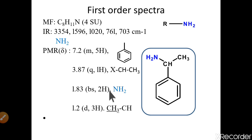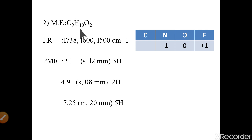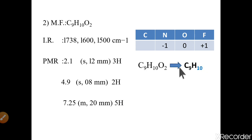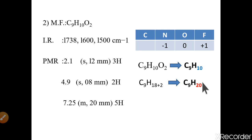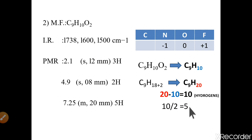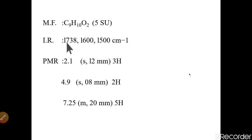Let's go to the next problem. The molecular formula is C9H10O2. To calculate the degrees of unsaturation, oxygen is ignored, so we work with C9H10. The saturated hydrocarbon formula for 9 carbons is C9H20. So 20 minus 10 equals 10 hydrogens difference, and 10 divided by 2 gives 5 degrees of unsaturation.